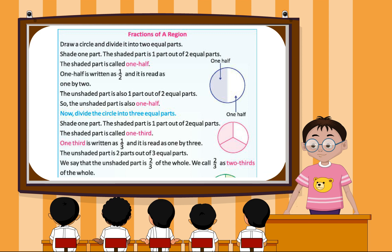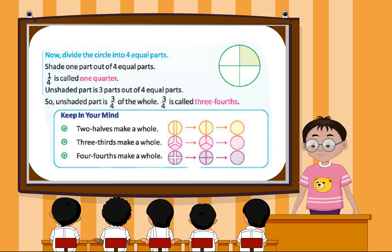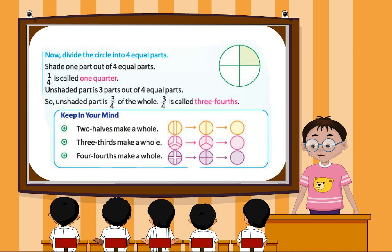We call 2 by 3 as 2 thirds of the whole. Now divide the circle into four equal parts. Shade 1 part out of four equal parts. 1 fourth is called 1 quarter. The unshaded part is 3 parts out of 4 equal parts, so it is 3 by 4 of the whole, called 3 fourths. Keep in mind: 2 halves make a whole, 3 thirds make a whole, 4 fourths make a whole.